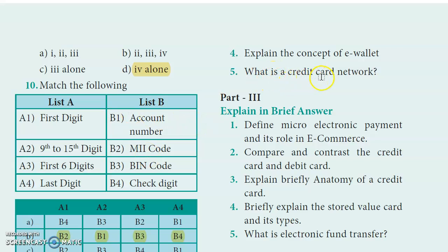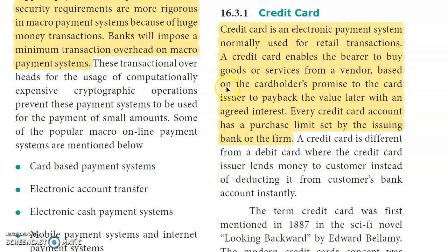Part 2, fifth question: What is a credit card? Page 224: A credit card is used for retail transactions in an electronic payment system. When you use a credit card, the vendor provides goods and services based on a promise. The cardholder agrees to pay interest, and the purchase limit depends on the issuing bank or firm.